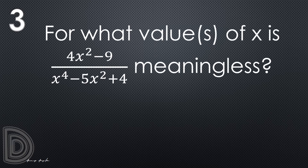Ready? For what values of x is 4x squared minus 9 all over x to the 4th minus 5x squared plus 4 meaningless? Again, for what values of x is 4x squared minus 9 all over x to the 4th minus 5x squared plus 4 meaningless? 30 seconds, go!